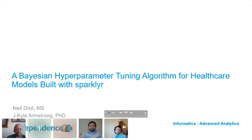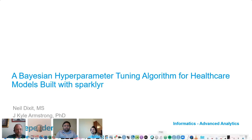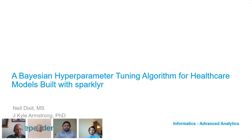Good evening. My name is Kyle Armstrong. We also have Neil Dixit here with us. We're from the Advanced Analytics team at Independence Blue Cross. Today we'll be presenting a Bayesian algorithm we developed in R, which we use for tuning Spark's machine learning hyperparameters.